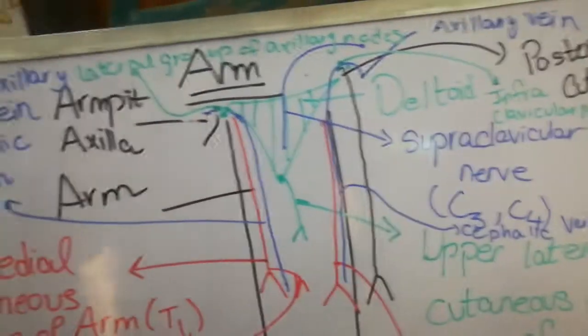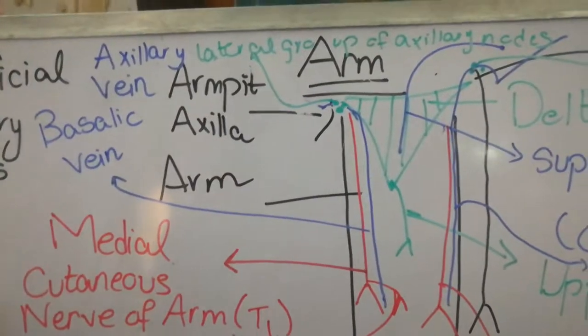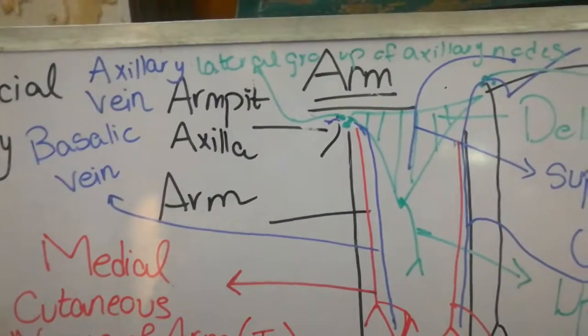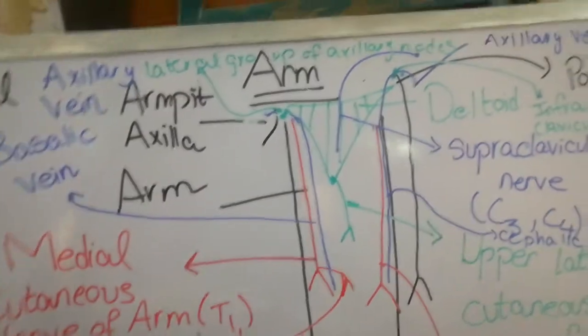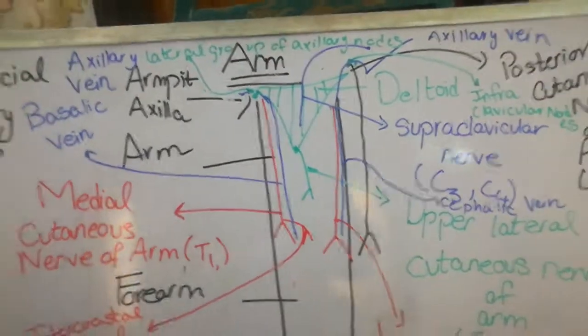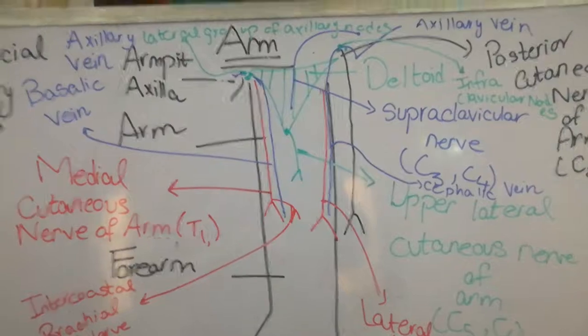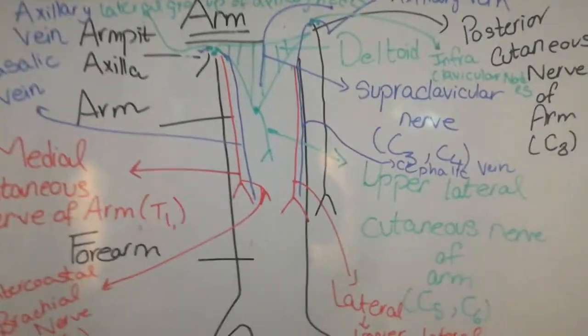it will drain into the lateral group of the axillary nodes. The lymph nodes that drain them are called the lateral group of the axillary nodes. That was all for the lymphatic drainage as well as the veins of the arm. Hope it's understood, thank you.